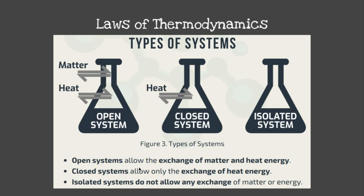A closed system does not have an exchange of matter, only an exchange of heat or energy. An example is an Erlenmeyer flask with a cork — the cork is airtight so matter cannot enter or exit, but heat can still be exchanged through the glass. An isolated system does not allow any exchange at all; an example is a bomb calorimeter.